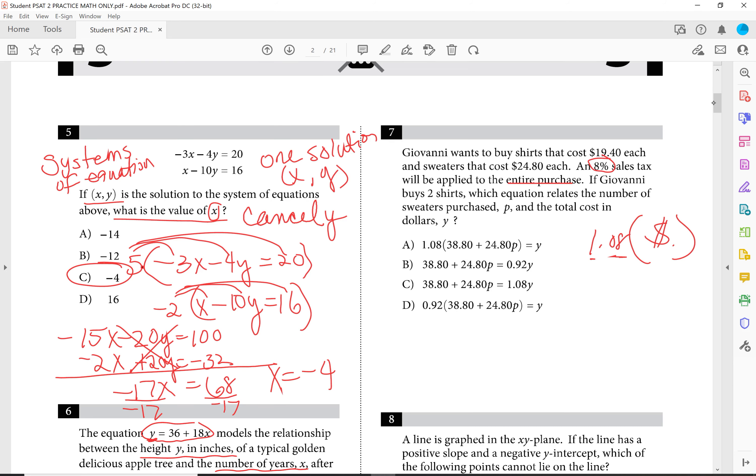Notice in the question, Giovanni wants to buy shirts that cost $19.40 each and sweaters that cost $24.80 each. At 8% sales tax will be applied to the entire purchase. If Giovanni buys two shirts, well, the shirts are $19.40. If I multiply that by 2, then I get $38.80. If Giovanni buys two shirts, which equation relates to the number of sweaters purchased P? The sweaters is P. And the total cost in dollars, why? So if the sweaters cost $24.80, and he happens to buy P number, you would say then $1.08, which is the tax and the cost at 8%, with the $38.80, the two shirts that he purchases, plus the $24.80 times P, because we don't know how many sweaters he purchases, and that's equivalent to our Y value, which is answer choice A. Done.